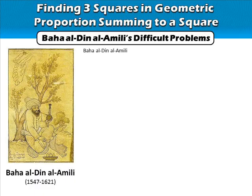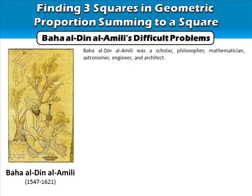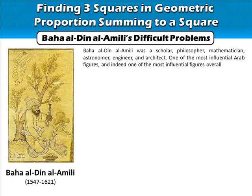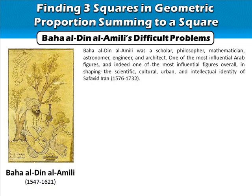Baha al-Din al-Amiri was a scholar, philosopher, mathematician, astronomer, engineer and architect — one of the most influential Arab figures, and indeed one of the most influential figures overall in shaping the scientific, cultural, urban and intellectual identity of Safavid Iran.